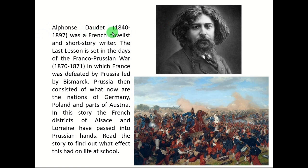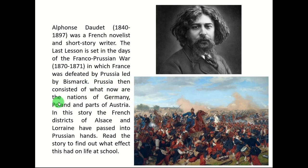Alphonse Daudet is the author of this chapter. He was born in 1840 and he died in 1897. He was a French novelist and short story writer. The Last Lesson is set in the days of the Franco-Prussian War which was fought in 1870 and 1871. In this war, France was defeated by Prussia led by Bismarck. Prussia then consisted of what now are the nations of Germany, Poland and parts of Austria.